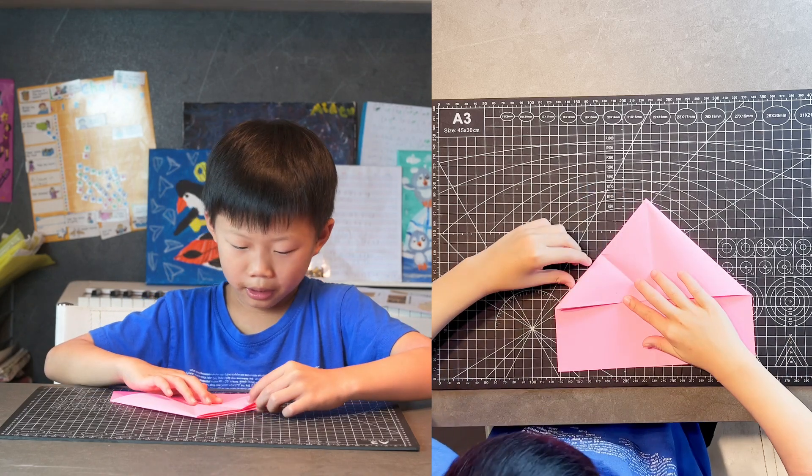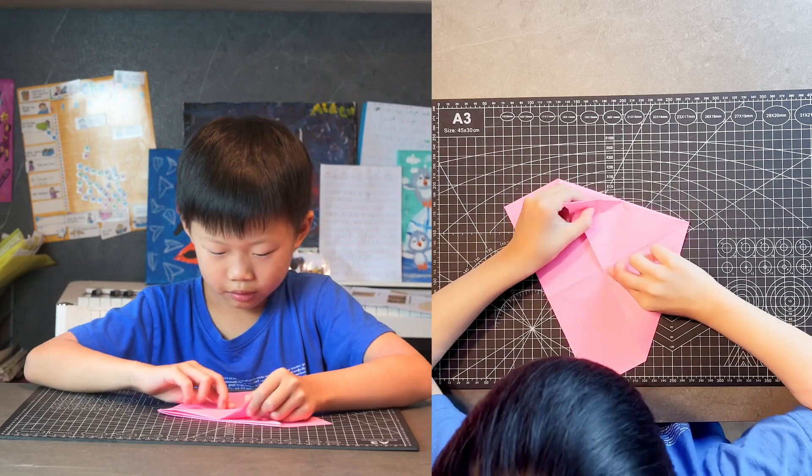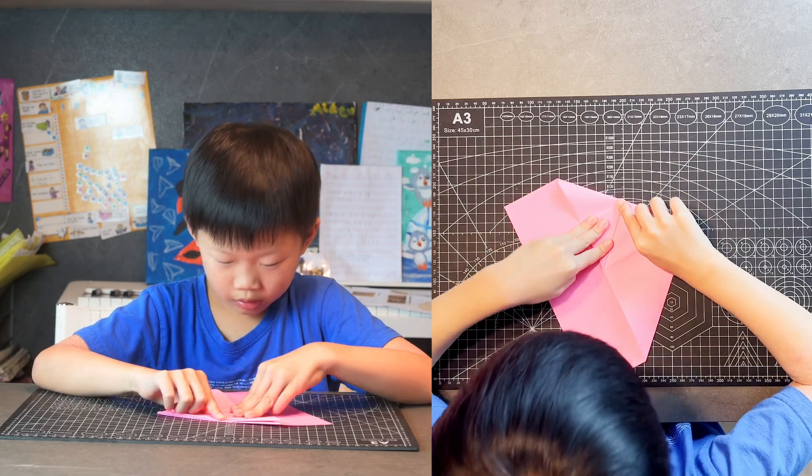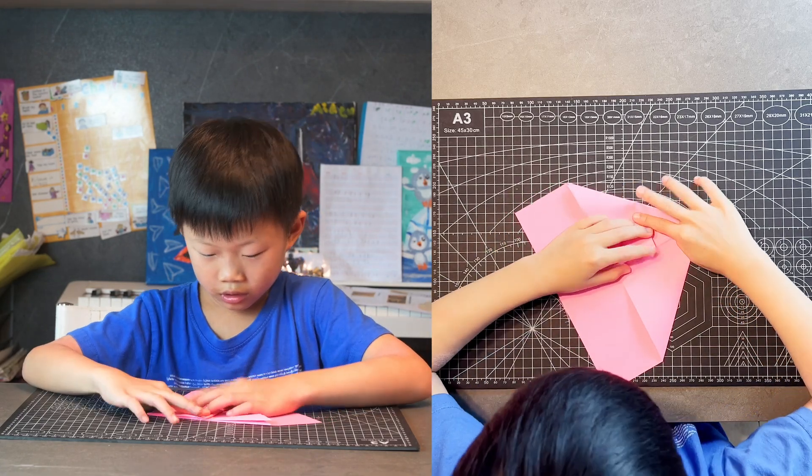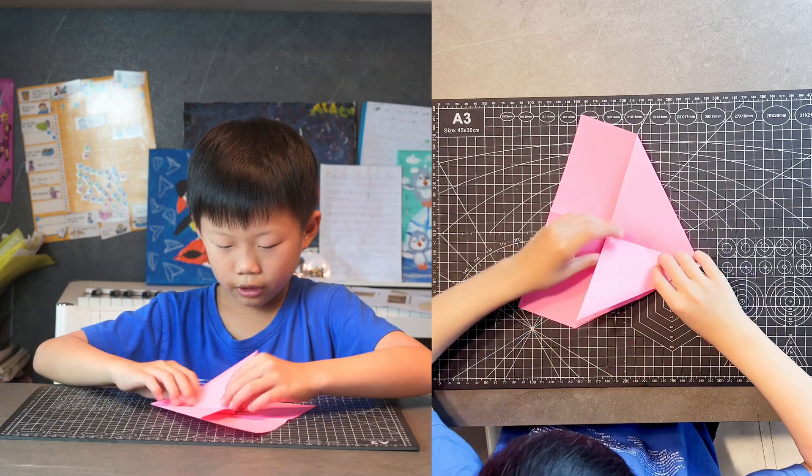And then open it back up and then fold this edge to that crease, or this one to that point. Now, do the same thing on the other flap.